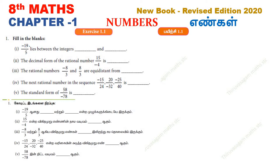First sub-question: minus 19 by 5 lies between the integers dash and dash. So, what are the two integers between which minus 19 by 5 lies? We will divide 19 by 5.